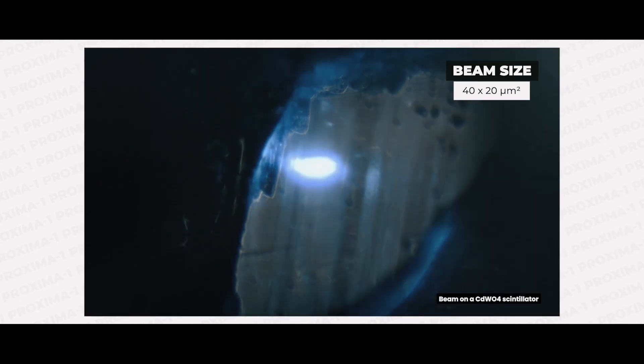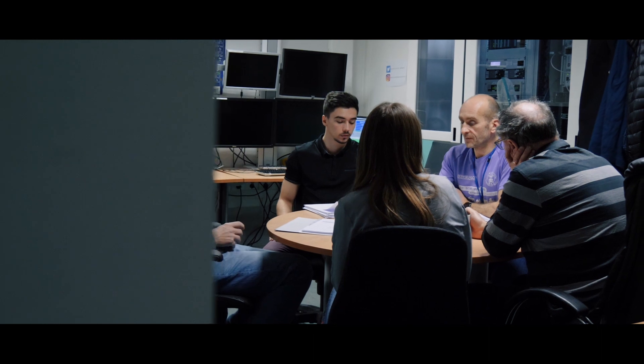The Proxima 1 team is composed of five people: one beamline responsible, an assistant engineer, two beamline scientists and an industrial liaison scientist.